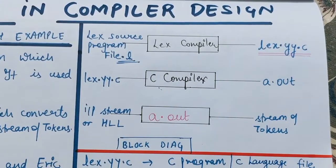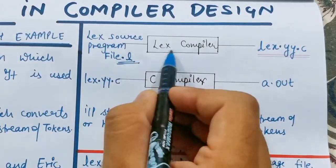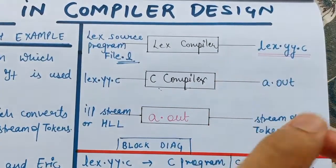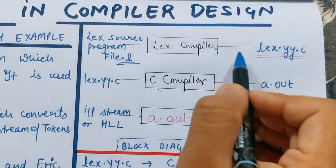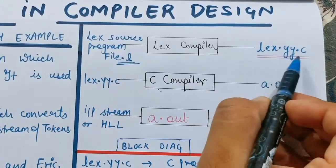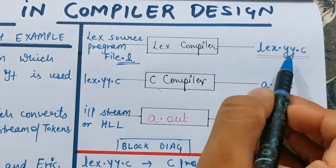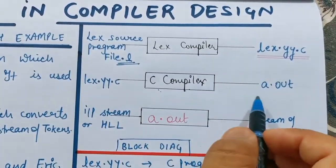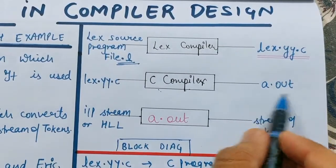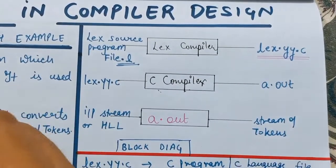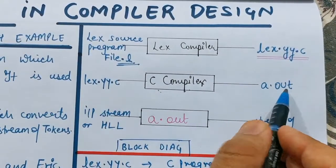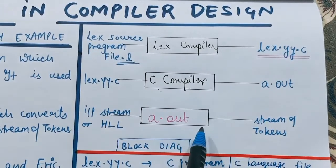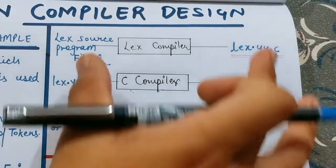This source program is written in Lex language. We give this file as input to the Lex compiler, and then we get an output file called 'lex.yy.c'. This name will always be the same, so just remember it. This is a C program file. This C program file is then given as input to the C compiler, which generates a file called 'a.out'. This a.out is nothing but your lexical analyzer. When we give the input stream — the high-level language — to this lexical analyzer, we get a stream of tokens.